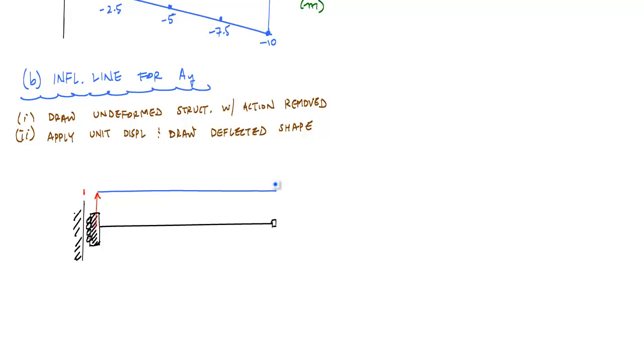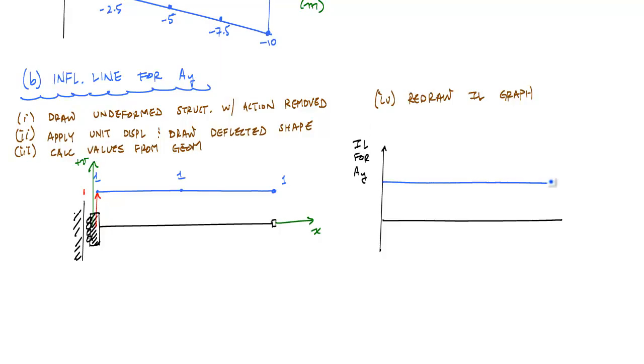And the values from geometry, which is pretty easy, are just 1 everywhere. And so if I want to draw my influence line nice and neat, I define x as 0, and then my vertical displacements are positive upwards. So my influence line for AY is just a straight line along the x-axis, which has units of meters. And all these values are just 1.